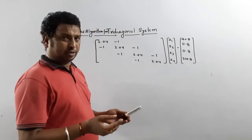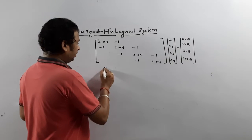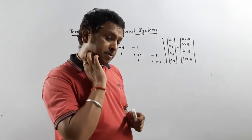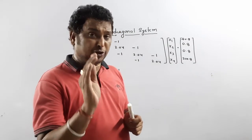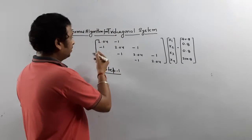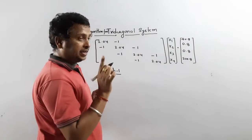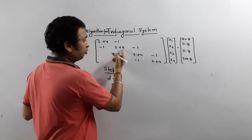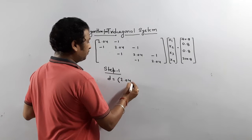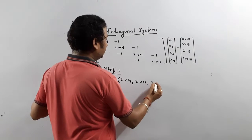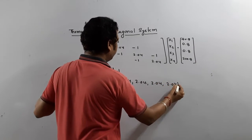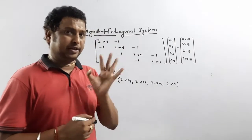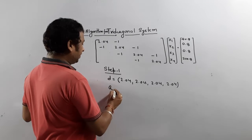Step 1: you define the values. For the principal diagonal, you denote it by D. The D values are D1, D2, D3, D4. For this problem, D1 = 2.04, D2 = 2.04, D3 = 2.04, and D4 = 2.04. So the main diagonal is defined by D. Then the upper diagonal you define by A.